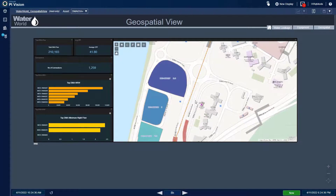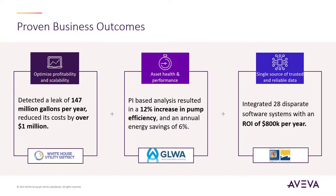The engineer notices that DMA02F has the highest NRW and MNF, making it a prime candidate for a potential leak. AVEVA customers across the world are currently using this solution to run operations more efficiently. The White House Utility District found a leak of 147 million gallons per year with the PI system; stemming this leak postponed a $15–20 million upgrade project while reducing operational costs by over $1 million. Great Lakes Water Authority's adoption of the PI system led to a 12% increase in pump efficiency through templatized analyses. The City of Riverside Public Utilities was able to integrate 28 software systems into a single source of truth in the PI system, with an ROI of $800K per year.